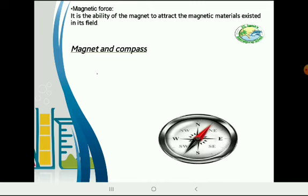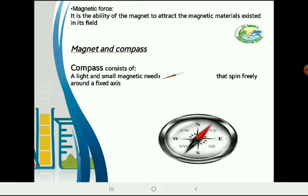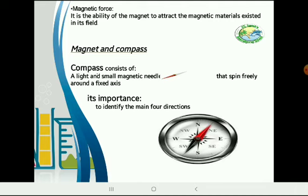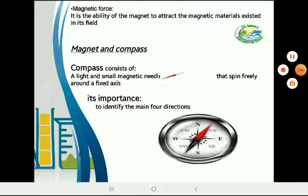Magnet and compass: this is a compass. The compass consists of a magnetic needle — a light and small magnetic needle that spins freely around a fixed axis. It is used to identify the four main directions: north, south, east, and west. Thank you and see you in another lesson.